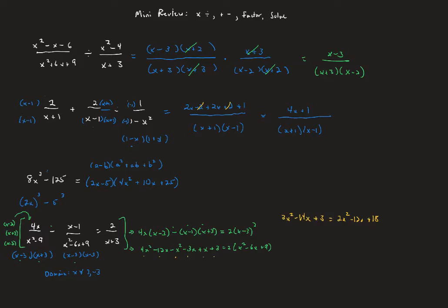Bringing everything to the left: 3x squared minus 2x squared gives x squared. Negative 14x plus 12x gives minus 2x. And 3 minus 18 gives minus 15. So we have x squared minus 2x minus 15 equals 0. That factors into x minus 5 times x plus 3. The potential solutions are x equals 5 and x equals negative 3. But our domain restriction excludes negative 3, so the only valid solution is x equals 5.